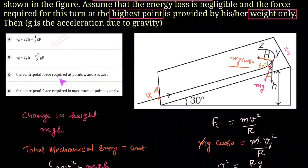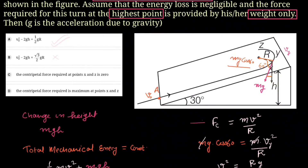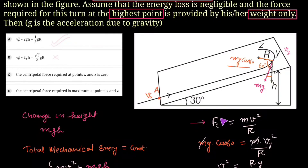Option B is not correct, as shown by the equation we derived. Option C states that the centripetal force required at points X and Z is zero. However, for an object to move in a circular path, centripetal force is always required. Since X and Z are part of the circular motion, the centripetal force cannot be zero. So option C is incorrect.